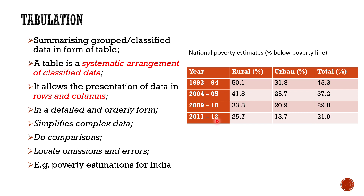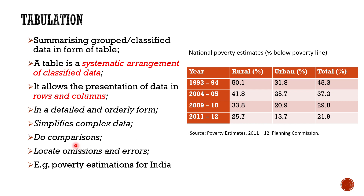In the poverty estimation table, we have years from 1993 to 2011-12 in rows, and columns with classifications like rural, urban, and total population. In rural areas we can see poverty estimates, in urban areas their estimates, and we can make comparisons — for example, the difference between rural and urban poverty in 1993 versus 2011-12. This demonstrates how tabulation simplifies and summarizes data for comparison.